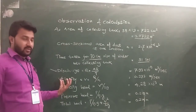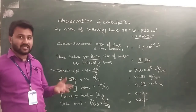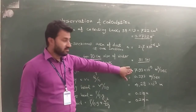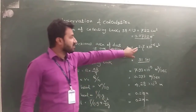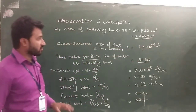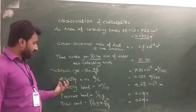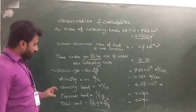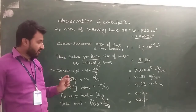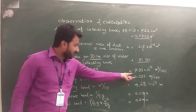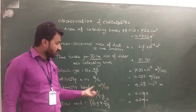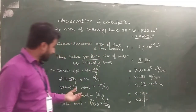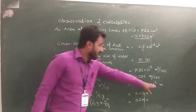The velocity is calculated from the equation discharge divided by area of the duct. So V equals 7.93 × 10⁻⁵ divided by 2.7 × 10⁻⁴ meter square, giving velocity as 0.293 meter per second. The velocity head is V squared divided by 2G. With G equal to 9.81, the velocity head is found as 4.28 × 10⁻³ meter.